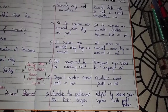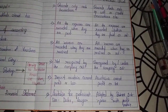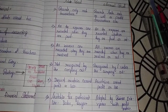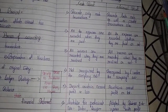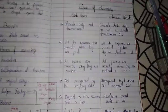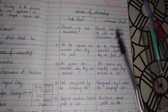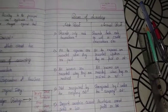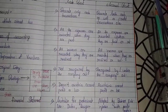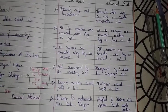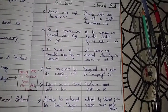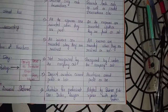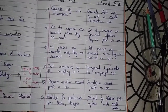Fifth, cash base does not ascertain correct profit or loss — kyunki business mein cash aur credit dono tarah ke transactions hote hain, aur cash base sirf cash transactions hi record karta hai — whereas accrual base gives the correct profit or loss.